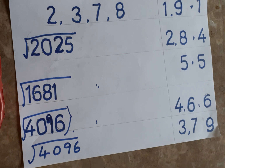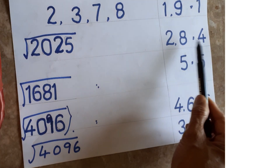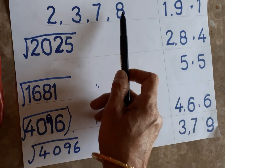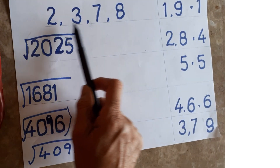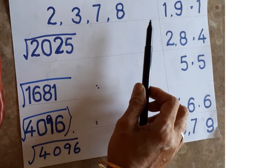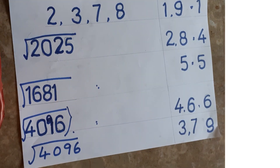At least memorize the squares of numbers 1 to 20 — one squared is 1, two squared is 4, and so on. Also remember: in the units place of perfect square numbers, 2, 3, 7, and 8 will never appear. You should remember this — anywhere you check, these numbers will not be there in the units place of a perfect square.